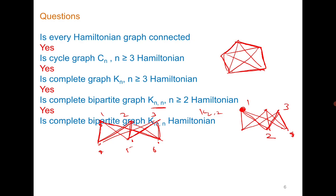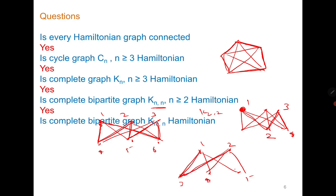At the same time, if you try K_m,n where m ≠ n, you will observe that it is not Hamiltonian. Consider K2,3 with vertices 1, 2, 3, 4, 5. If you start from 1 and go to 3, then 3 to 2, 2 to 4, and 4 to 1, vertex 5 has not been visited. So a complete bipartite graph is Hamiltonian when m equals n, otherwise not. We will prove this in the next slide.